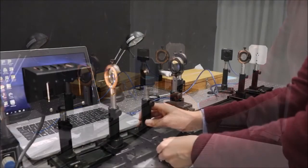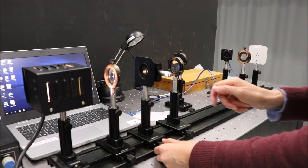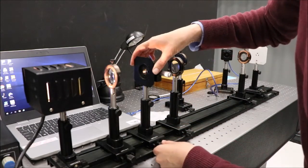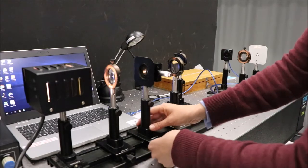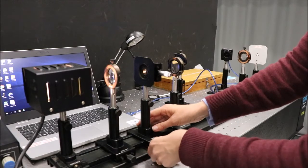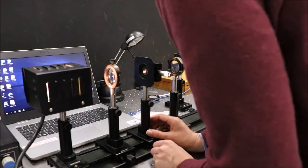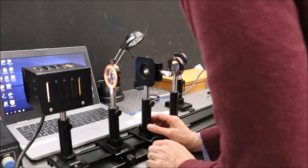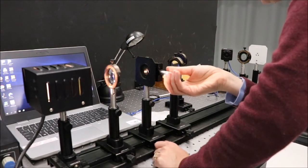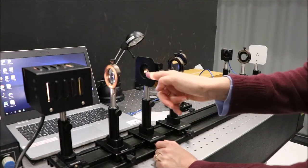Now add the slit roughly halfway between the collector lens and the collimator lens. Make sure that the slit is vertical. Close down the jaws of the slit and move it back and forth until you have an image of the filament being formed on the slit.